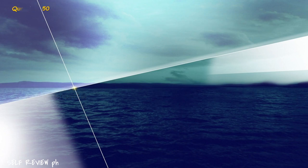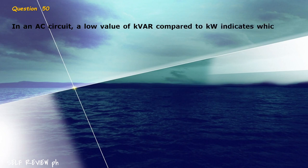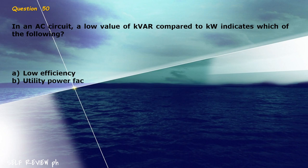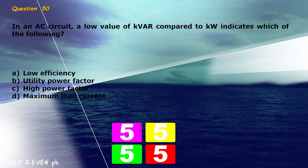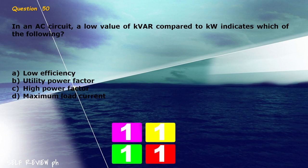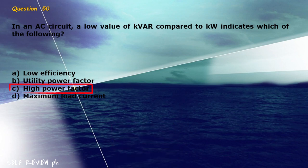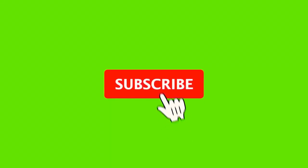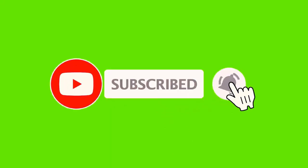Question 50: In an AC circuit, a low value of kVAR compared to kilowatt indicates which of the following? A) low efficiency, B) low utility power factor, C) high power factor, D) maximum load current. The correct answer is letter C, high power factor.